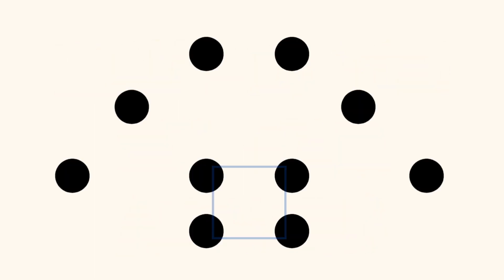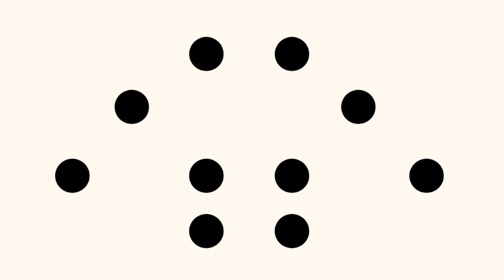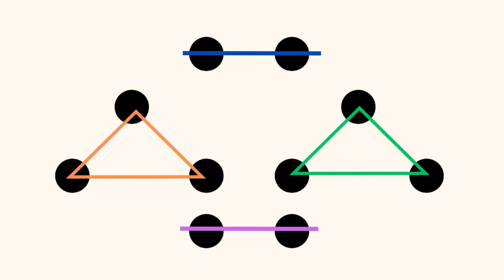Did you see four dots in the shape of a square in the middle and two diagonal lines with three dots each over it? You know that four plus the double of three equals ten. Make this signal if that's how you saw it. Or did you see two horizontal lines with two dots each on the top and the bottom, and two triangles with three dots each on the right and the left? You know that the double of two is four and the double of three is six, and four plus six equals ten.